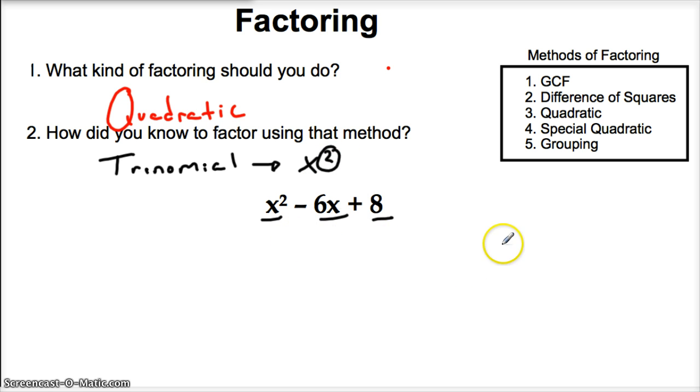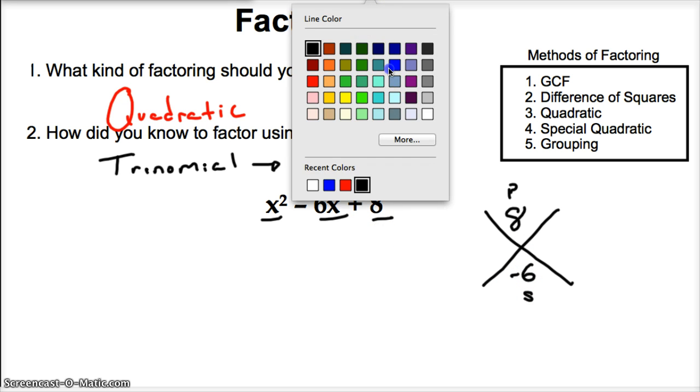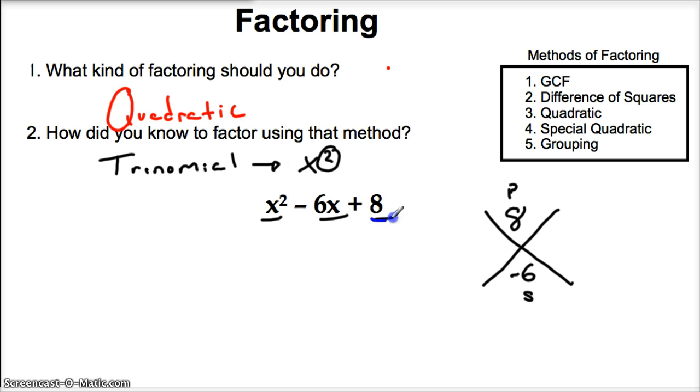When I do it this way, well, what we do is we write out our little x. Our product has to be 8, and our sum has to be negative 6. We just got those numbers from here and here. So our product has to be 8, we just got it from here, and our sum has to be 6. We got that from right here. What are our two numbers? Let's think about this. I know it's negative 4 and negative 2. If I multiply these together, I get positive 8. If I add them up, I get negative 6.